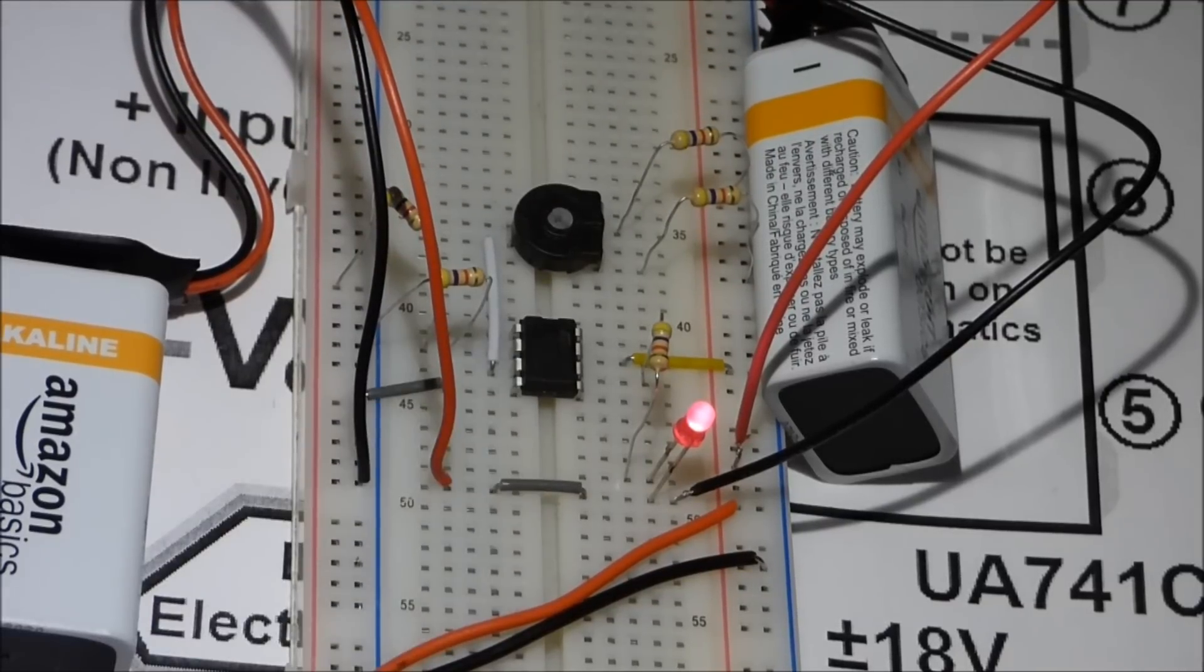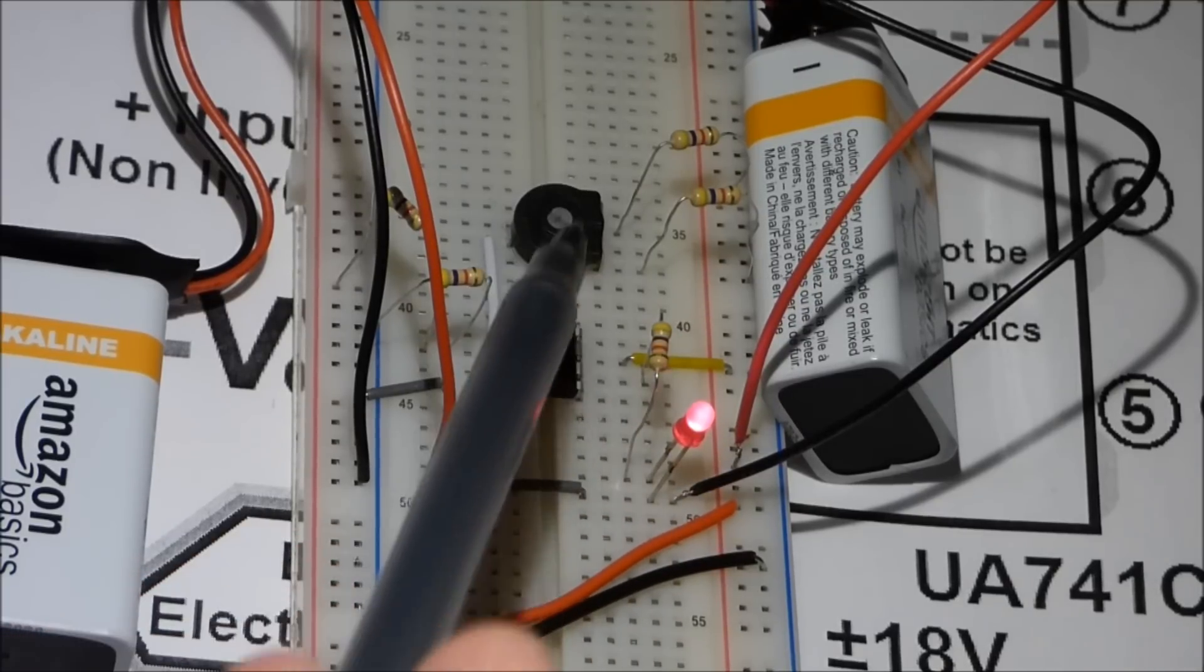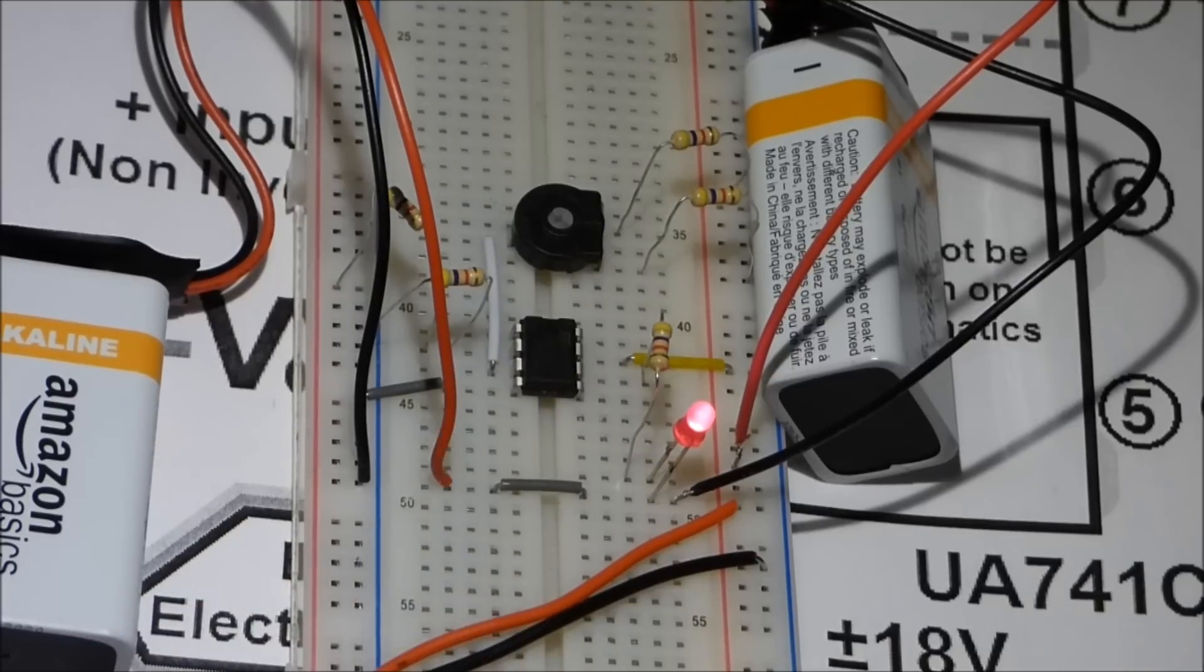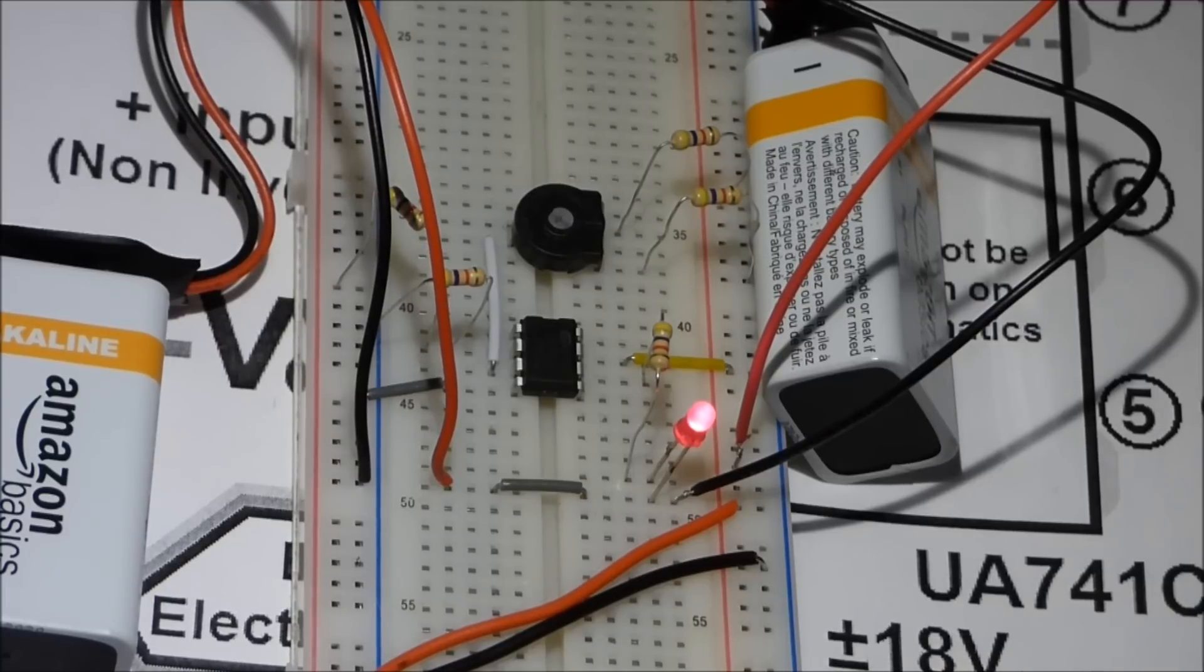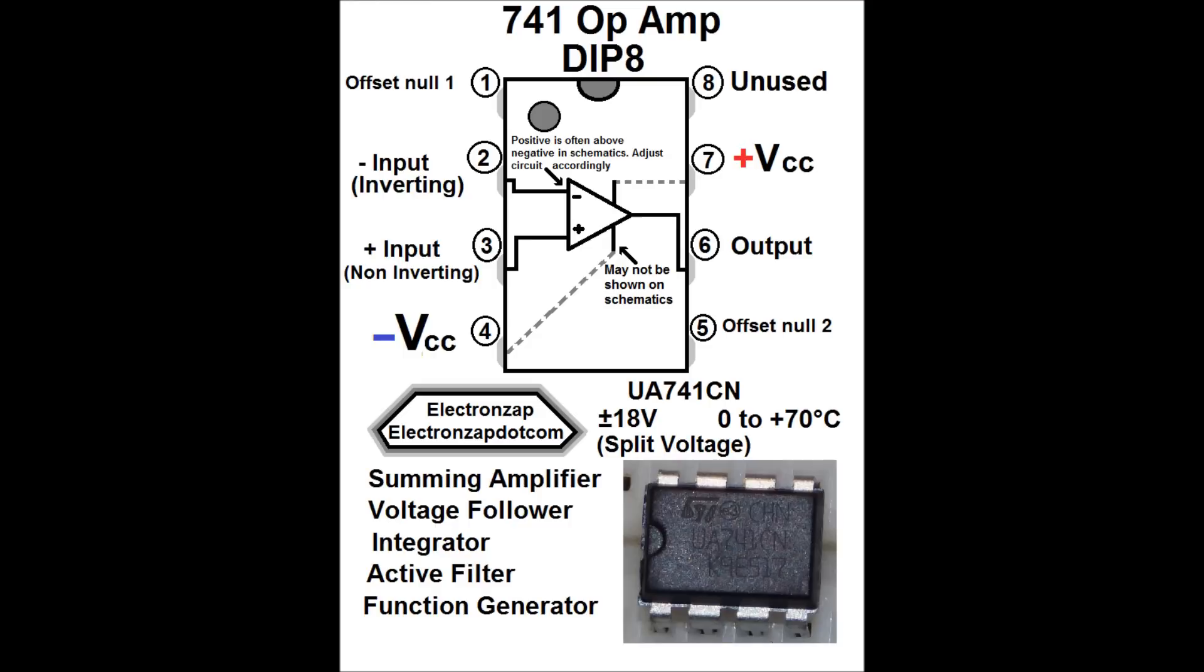And as you can see, it's an easy circuit to put together. It's just a split power supply, an output, and two inputs, which are voltage dividers in this case. So it's a good circuit to put together to get used to the 741 chip.